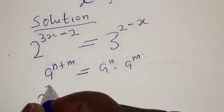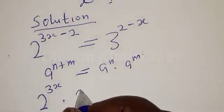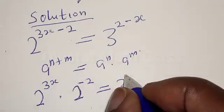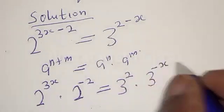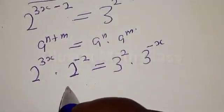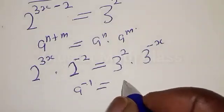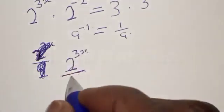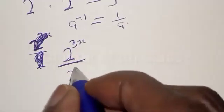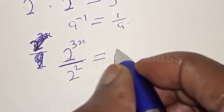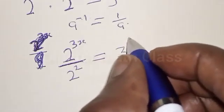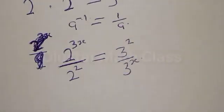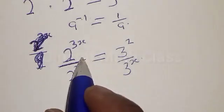We have 2 raised to power 3x, multiplied by 2 raised to power minus 2, equal to 3 squared multiplied by 3 raised to power minus x. Remember also, if you have a raised to power minus 1, that is the same thing as 1 over a. Therefore we have: 2 raised to power 3x over 2 raised to power 2, equal to 3 raised to power 2 over 3 raised to power x.